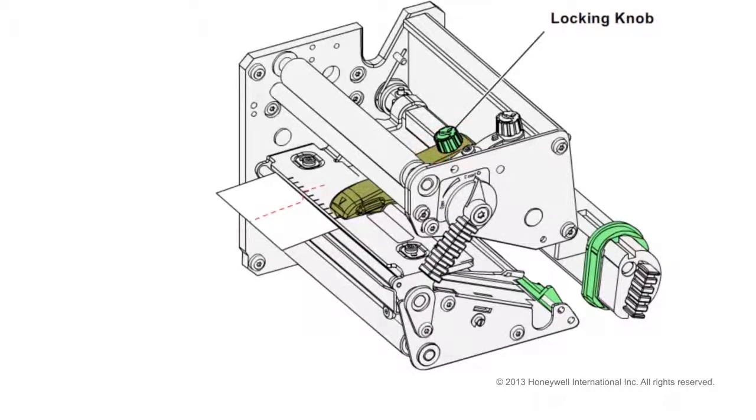Loosen the locking knob that holds the pressure arm in place by rotating it counterclockwise. A small screwdriver may assist in performing this action.